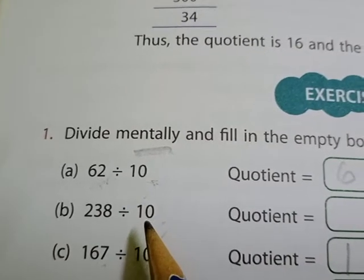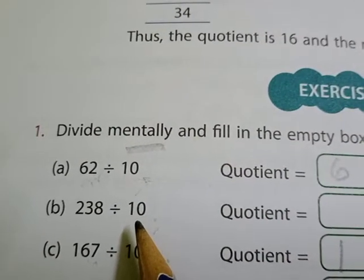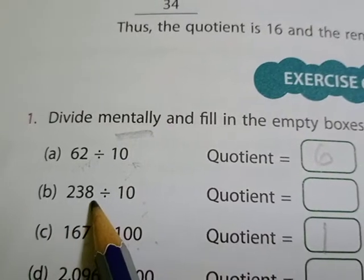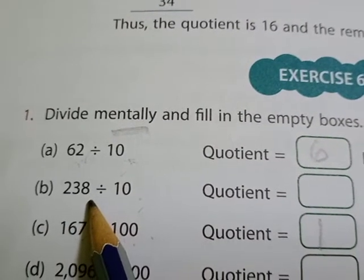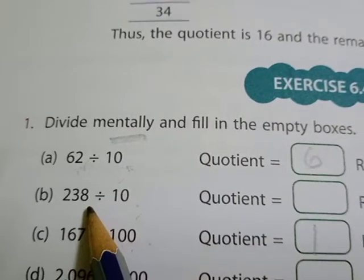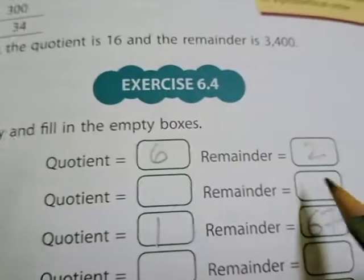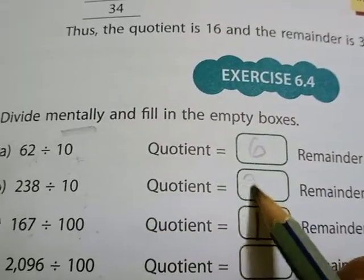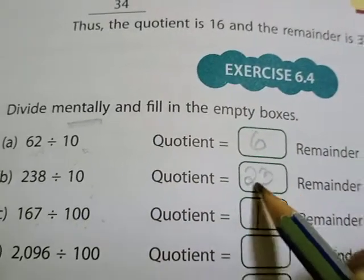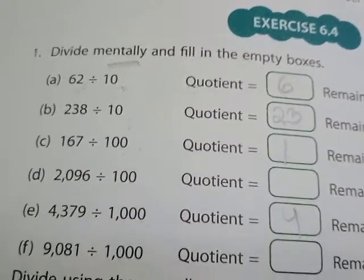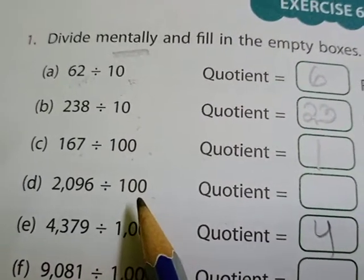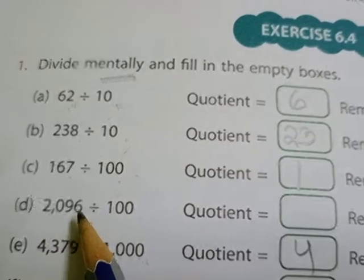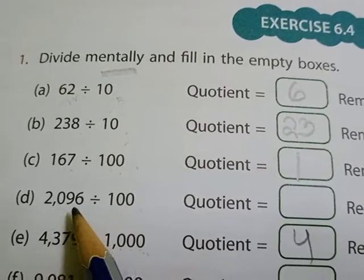One zero means from the given dividend, from the back side, only one digit will go into the remainder. So 8 will go into the remainder here, and 23 will be written in the quotient. Similarly, for the next one, two zeros are there — so from the back side, two digits will go into the remainder, that is 9 and 6.